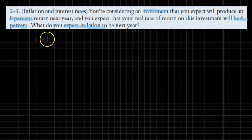1 plus the expected inflation, or just let me write it as inflation, is equal to the following ratio: 1 plus the nominal rate divided by 1 plus the real rate.